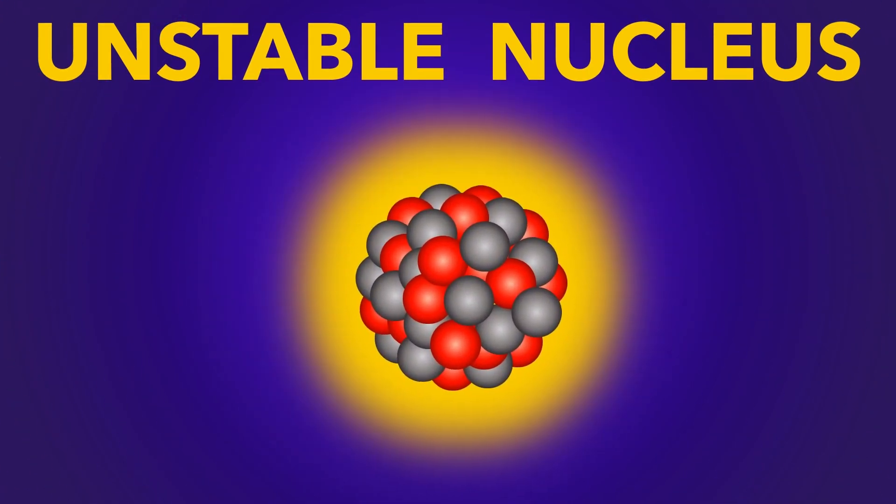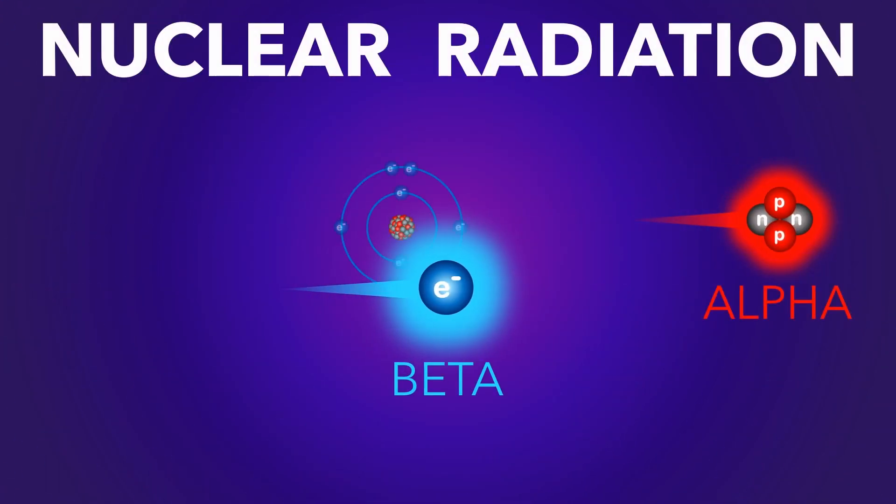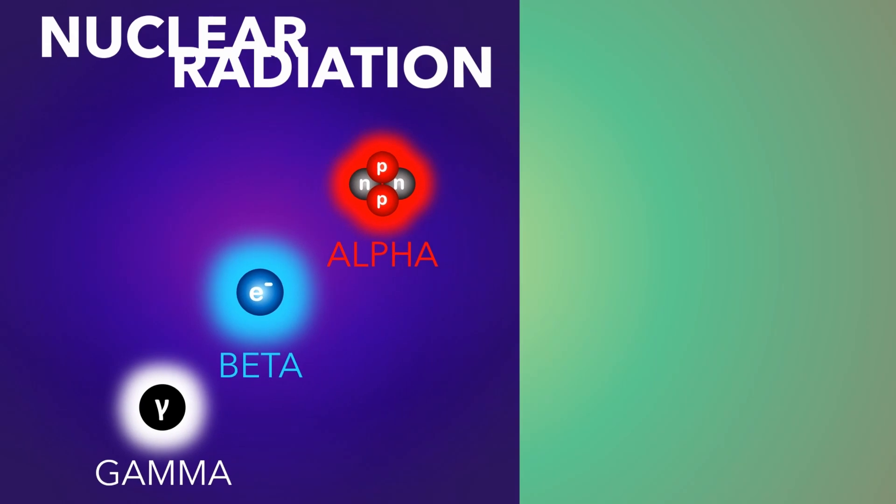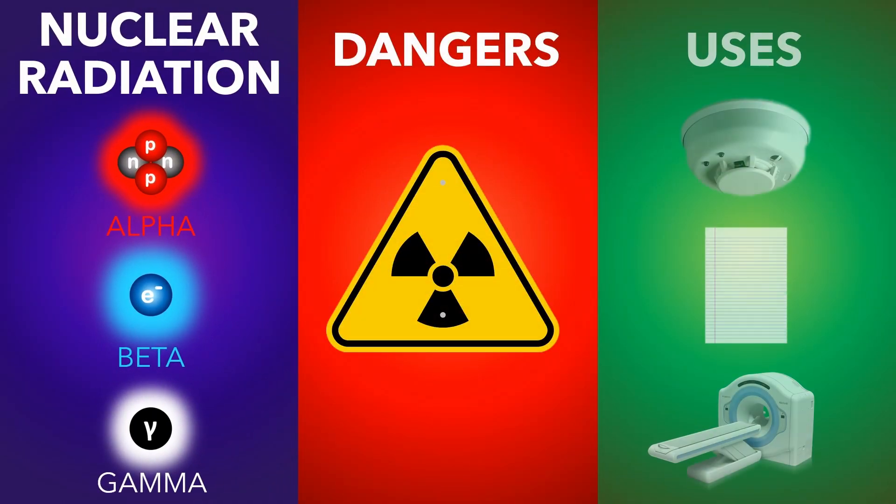When an unstable nucleus decays, it fires out alpha, beta or gamma radiation. What are the three types of nuclear radiation, and what are the dangers and uses?